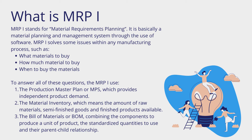What is MRP-1? MRP-1 stands for Material Requirements Planning. It is basically a material planning and management system through the use of software. MRP-1 solves some issues with any manufacturing process, such as what materials to buy, how much material to buy, and when to buy the materials.